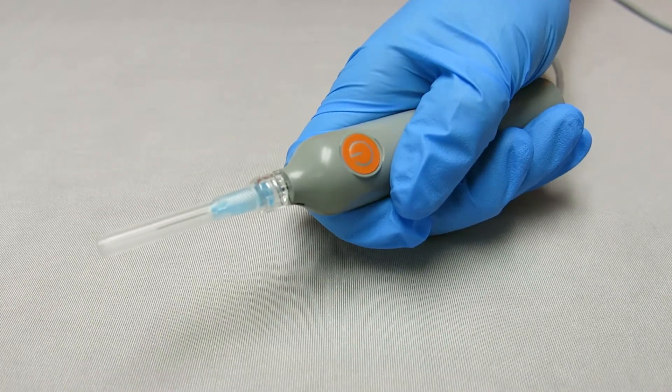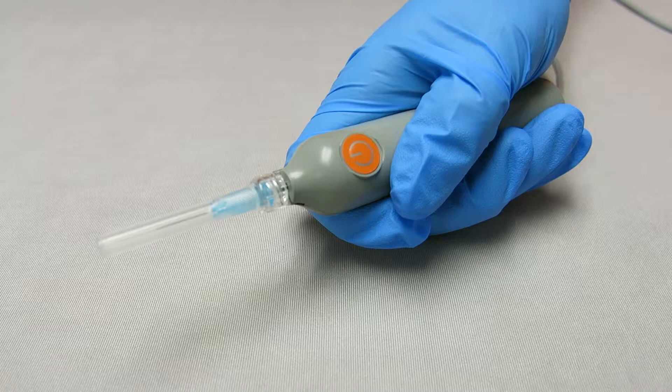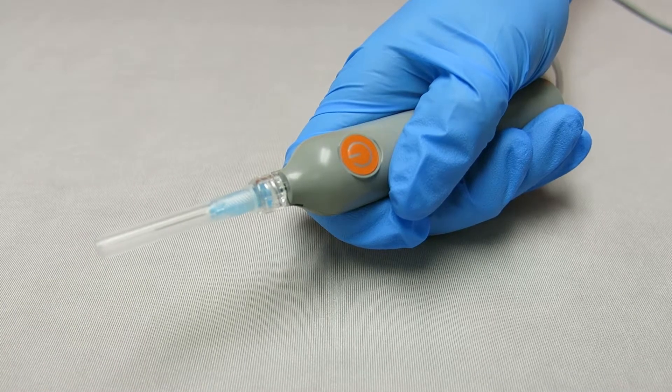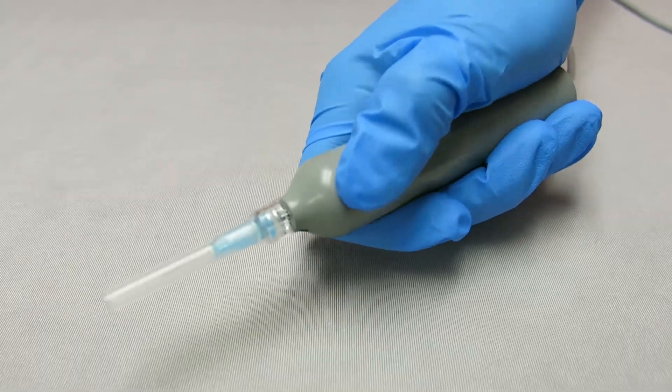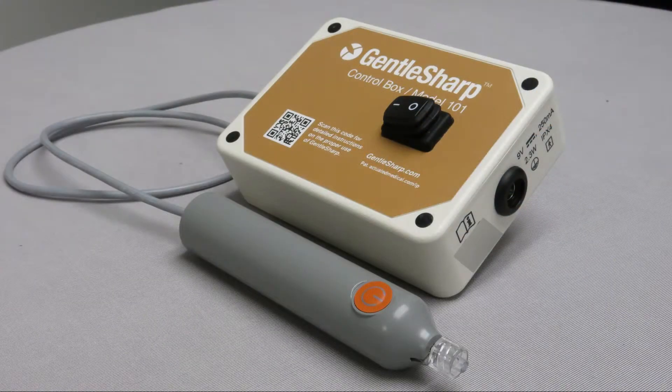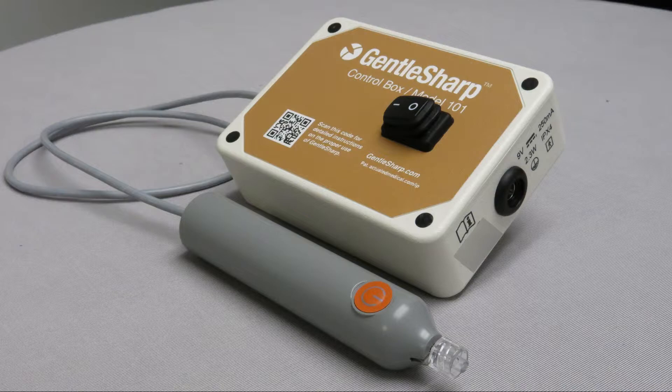verify handpiece vibration by firmly pressing the start-stop button on the handpiece. The handpiece will produce an audible tone when started and you'll feel a slight vibration in your hand. Once you feel the vibration, press the start-stop button to stop the vibration until you're ready to begin blood sampling. Now that you have everything set up, let's move on to our operating instructions.